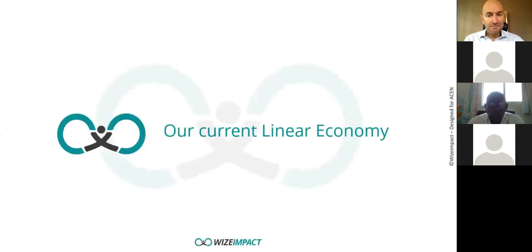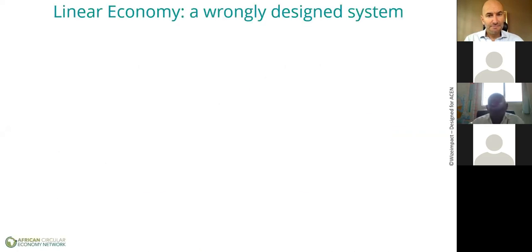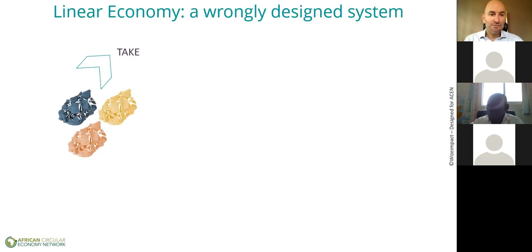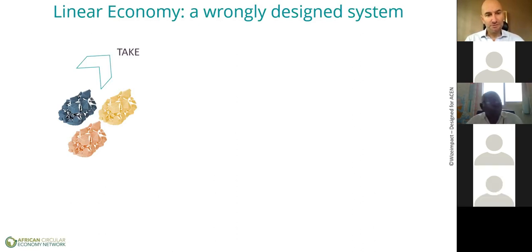What is the current linear economy? Basically, it's what we have realized as of late is a wrongly designed system. It's a system that leads to scarcity — all kinds of scarcity, starting with resource scarcity and pure environmental system scarcity. This scarcity will have to be shifted to a more responsible model in order to address the needs of the people. The linear economy starts with what we call the 'take' — the extractive phase of our industrial activities, where we extract resources from the ground. That extractive activity is huge in Africa.